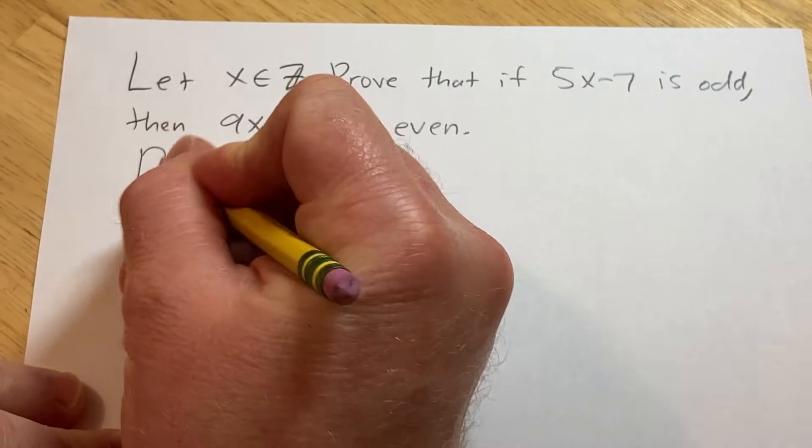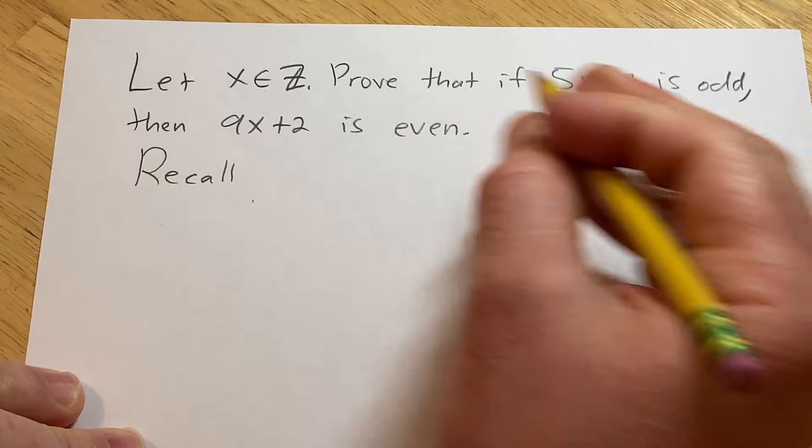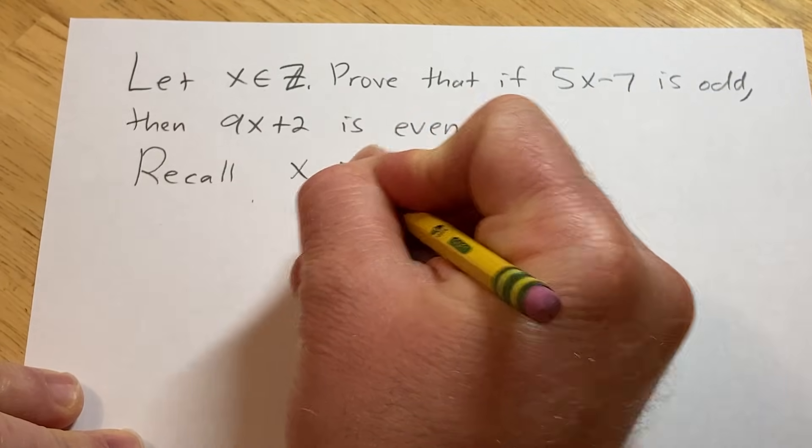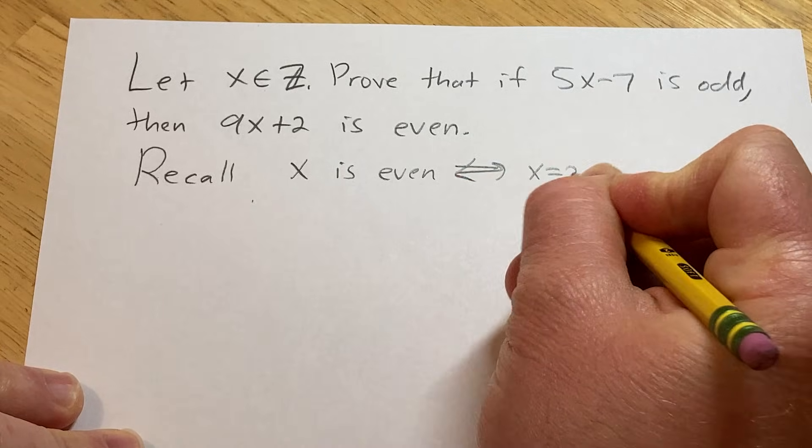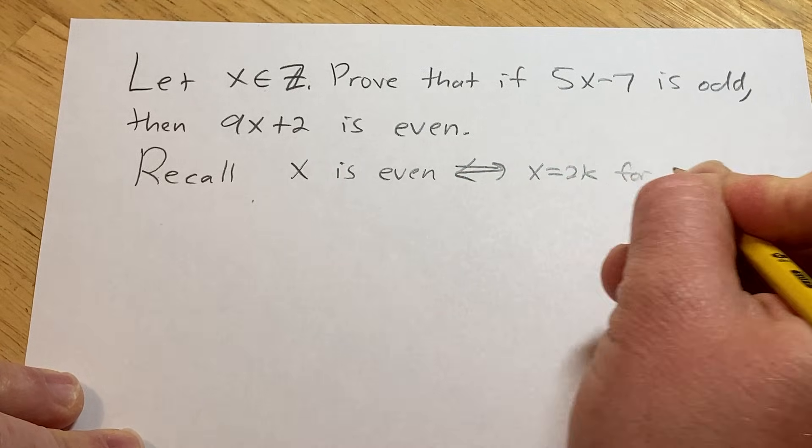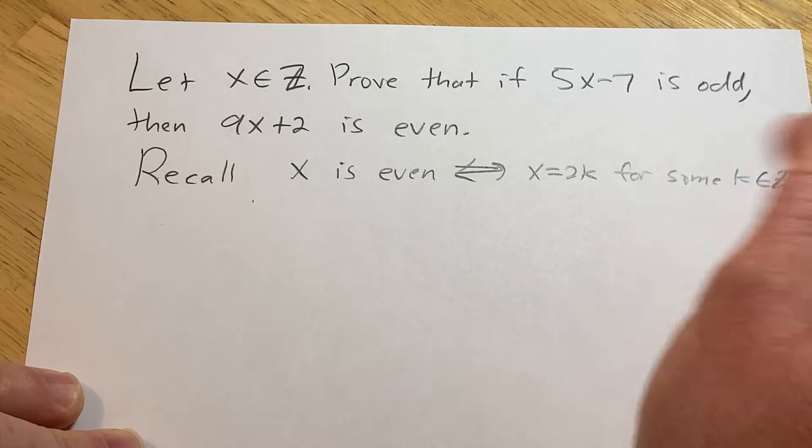So before we do the proof, let me just briefly recall what it means for an integer to be even or odd. So we'll say x is even, and that's the same thing as saying x equals 2k for some integer k, for some k in the set of integers.